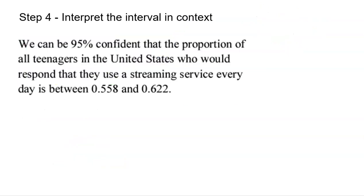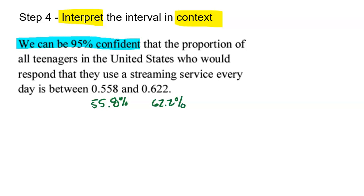For step four, we interpret the interval in context — a key part many students forget. We are 95% confident that the proportion of all teenagers in the United States who would respond that they use a streaming service every day is somewhere between 0.558 and 0.622, or equivalently 55.8% and 62.2%. Make sure to start with '95% confident' because this is not a guarantee — it is not 100% confidence, only 95% confident.